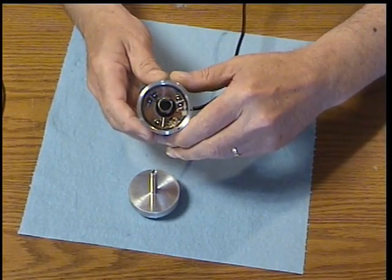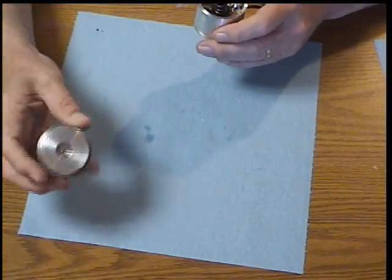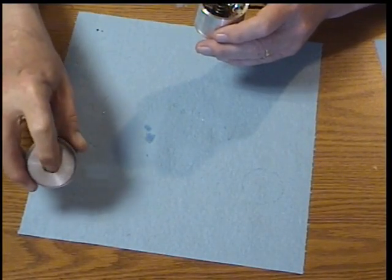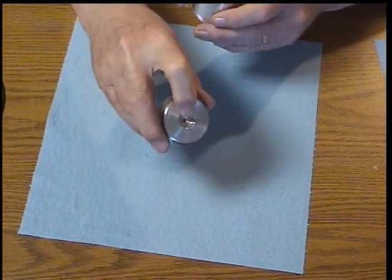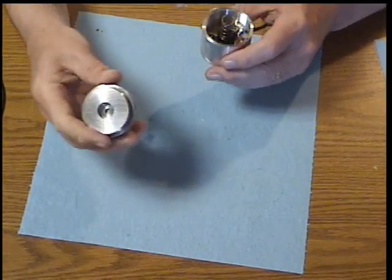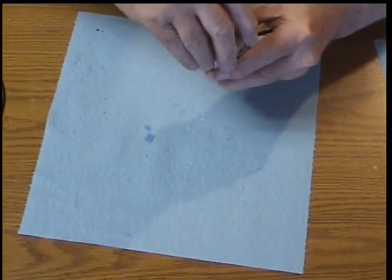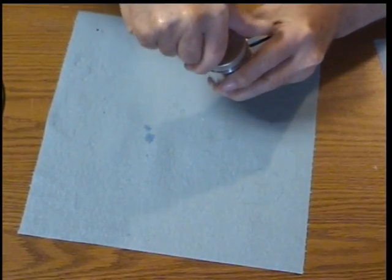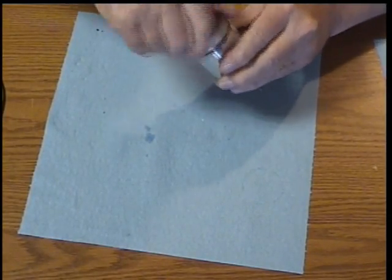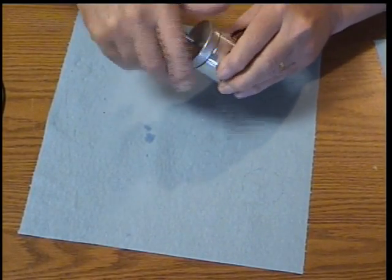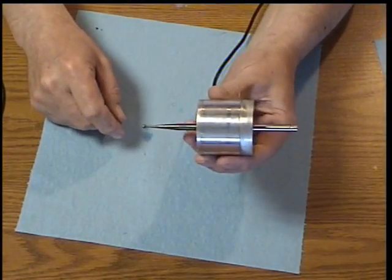So there's the probe tip in place. With the probe resting in that position, we put the spring into the recess of the probe cap, carefully push down, get it started threading, and screw it on up. And there is a completed probe.